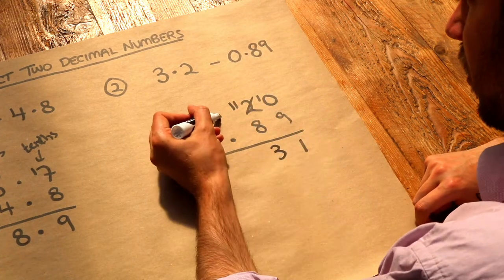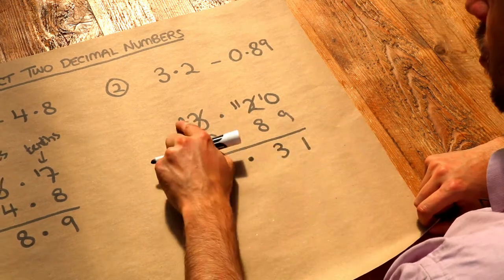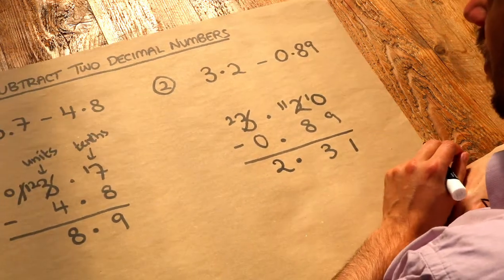Again, if I've got a decimal point here and decimal point here, I need to put the decimal point here. And finally, we've got 2 minus 0, which is just 2. And that is the final answer.